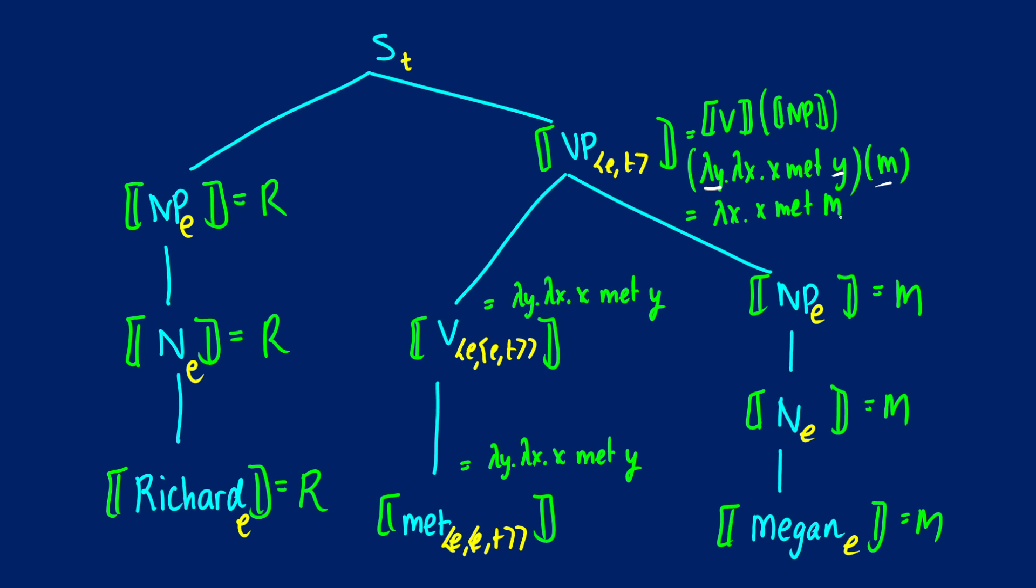Okay and now for the final node up top, the sentence node. So what we're going to do is we're going to apply lambda x dot x met M and we're going to put Richard in that, and the condition it's going to be true if that thing is true. So what we can write for the sentence is we can write this more so in plain English. It is going to be true, which is one, if and only if R met M.